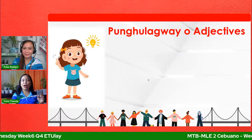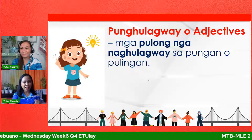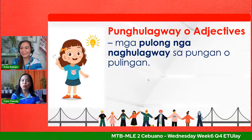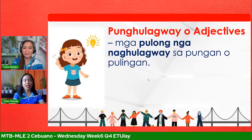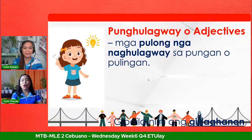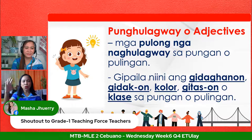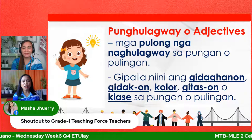Ang punghulagway mao ang mga pulong na naghulagway sa pungan o pulingan — nag-describe. Sa English, describe kung ka na ang word o mga pulong. Atong nangit muna ay naghulagway. Sama sa: buutan si mama — ang punghulagway na to ni mama kay buutan. Ang punghulagway o adjective kipailan ini ang kidaghan, kidak-on, kulor, gitason, o klasik sa pungan o pulingan.